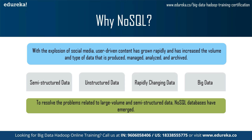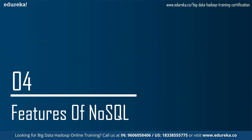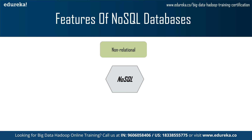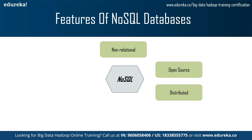NoSQL databases never follow the relational model and don't provide tables with flat fixed column records, so they don't require object-oriented mapping and data normalization. Most NoSQL databases are open source. Multiple NoSQL databases can be executed in a distributed fashion and they offer auto-scaling and failover capabilities.